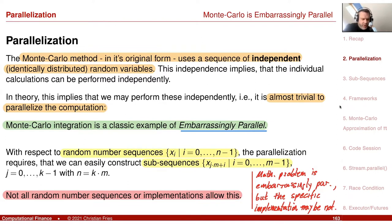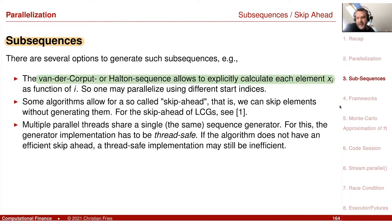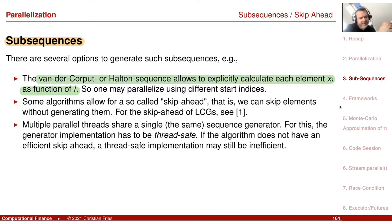The mathematical formulation is embarrassingly parallel, but it may happen that the implementation you use is not. The mathematical problem is embarrassingly parallel, but the specific implementation is maybe not embarrassingly parallel. So we have to talk about sub-sequences. There are different options for generating a sub-sequence. If you think about our session on the Van der Corput or the Halton sequence, they have the very nice feature that you can explicitly calculate element Xi as a function of the index — there is no problem.